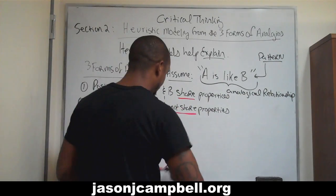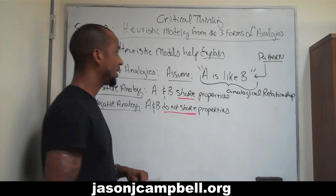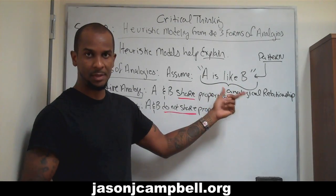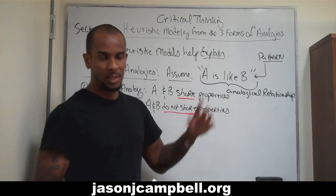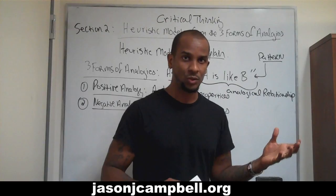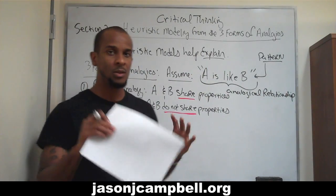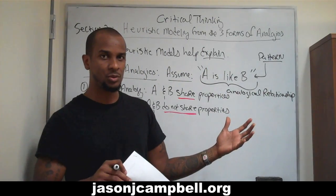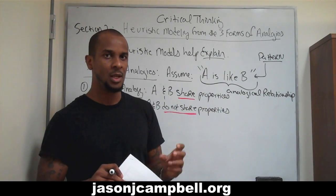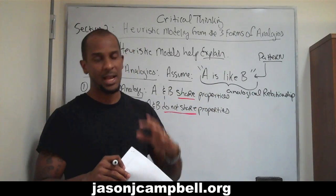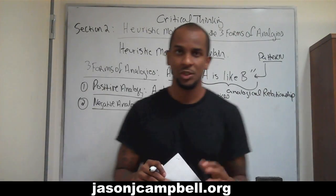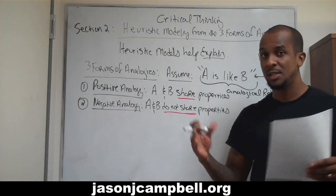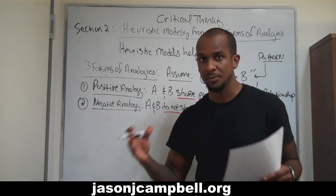We can have a positive analogical relationship between A and B, which basically says A and B share properties. We can have a negative analogical relationship with respect to A and B, which basically says A and B do not share properties.